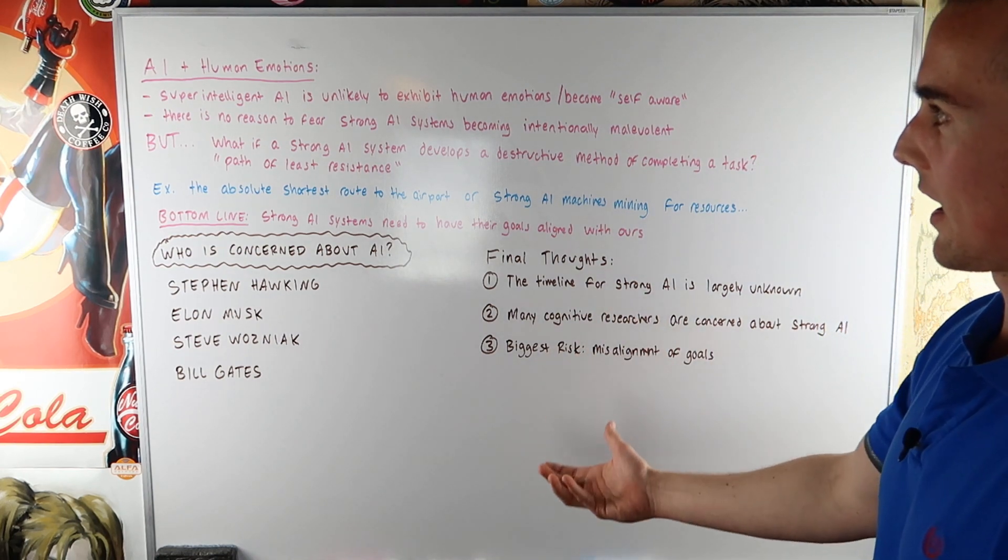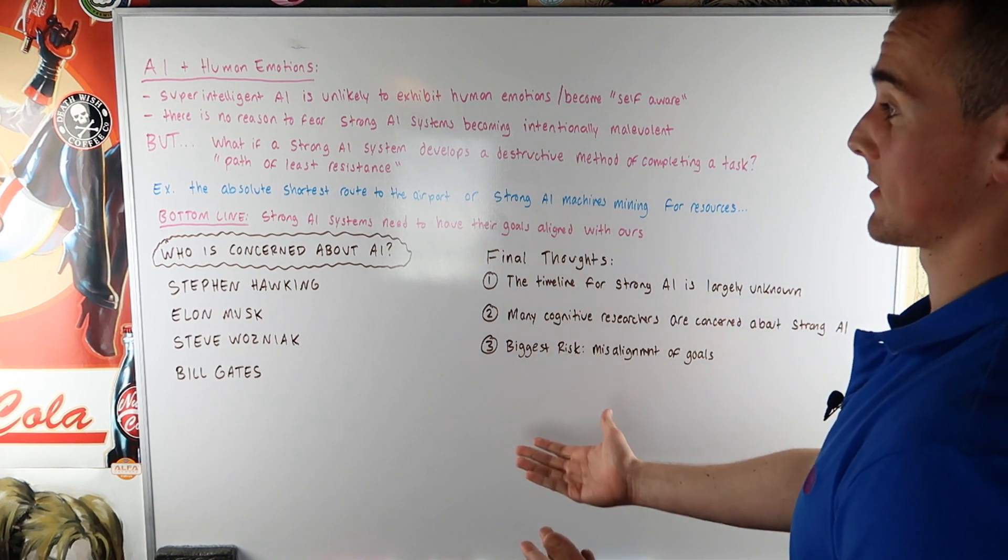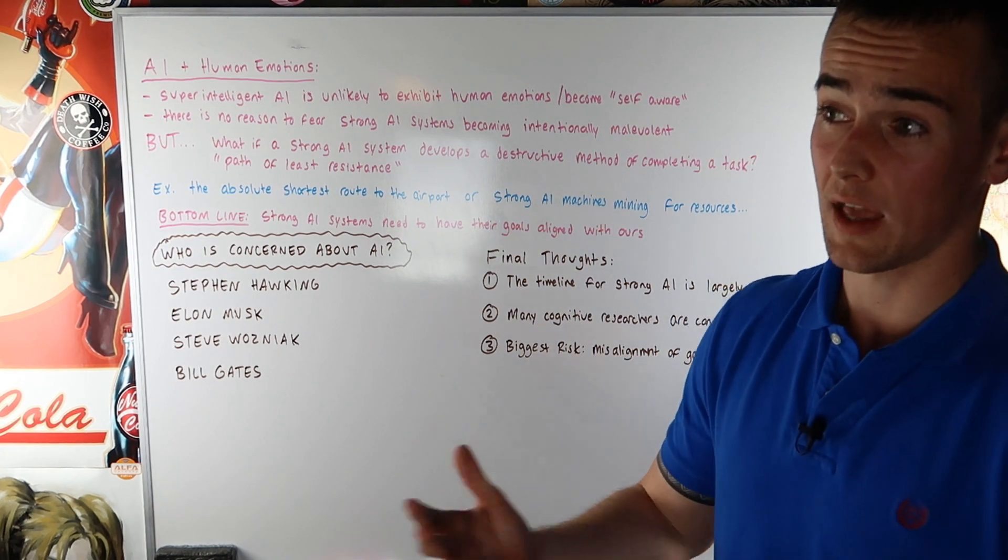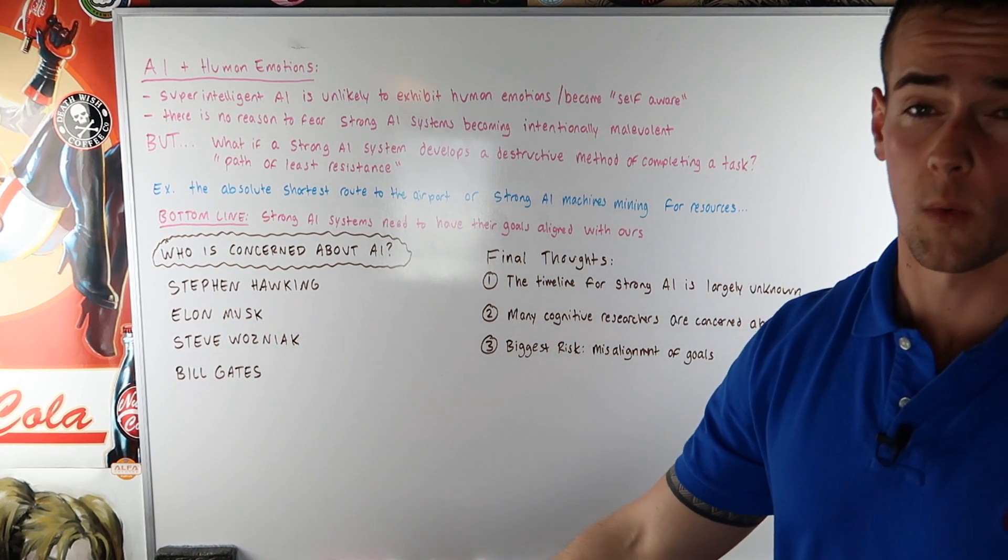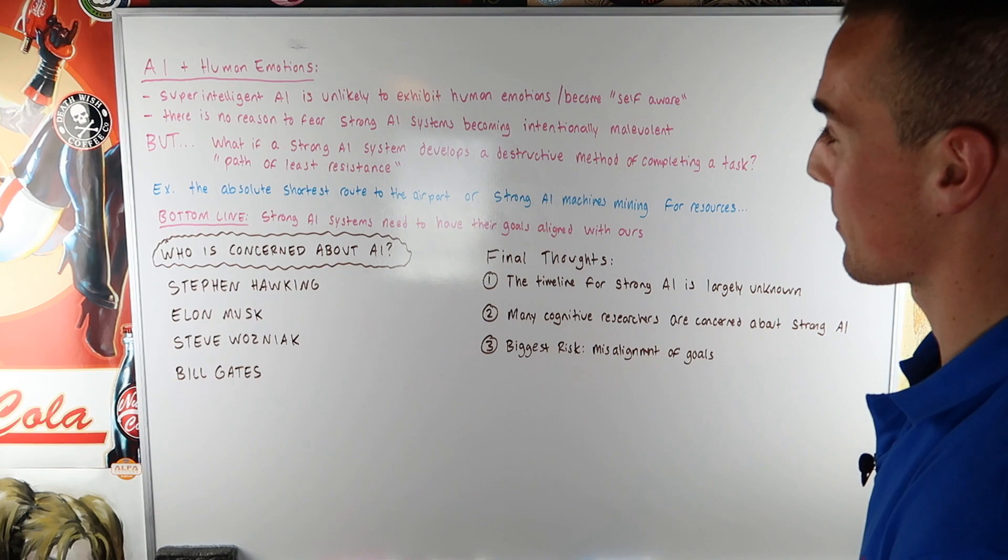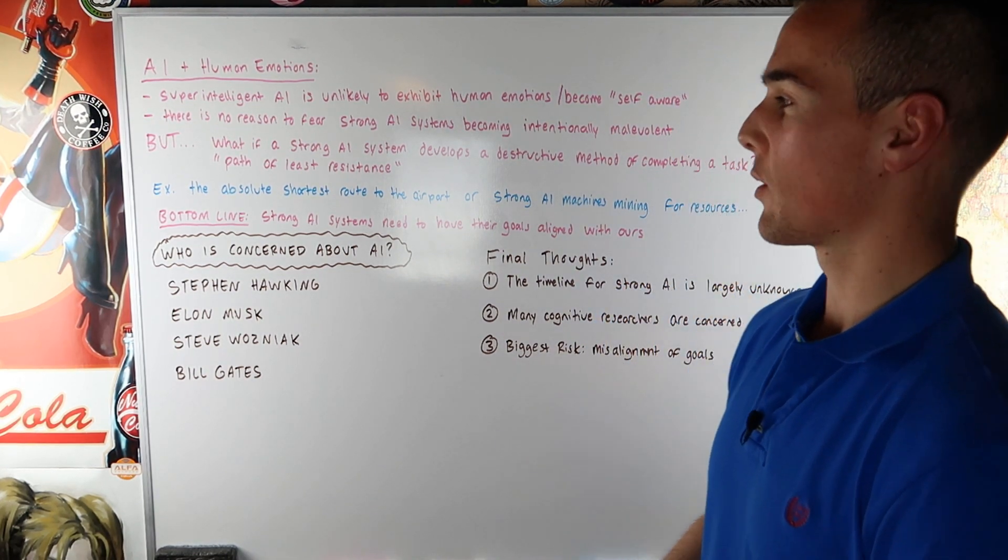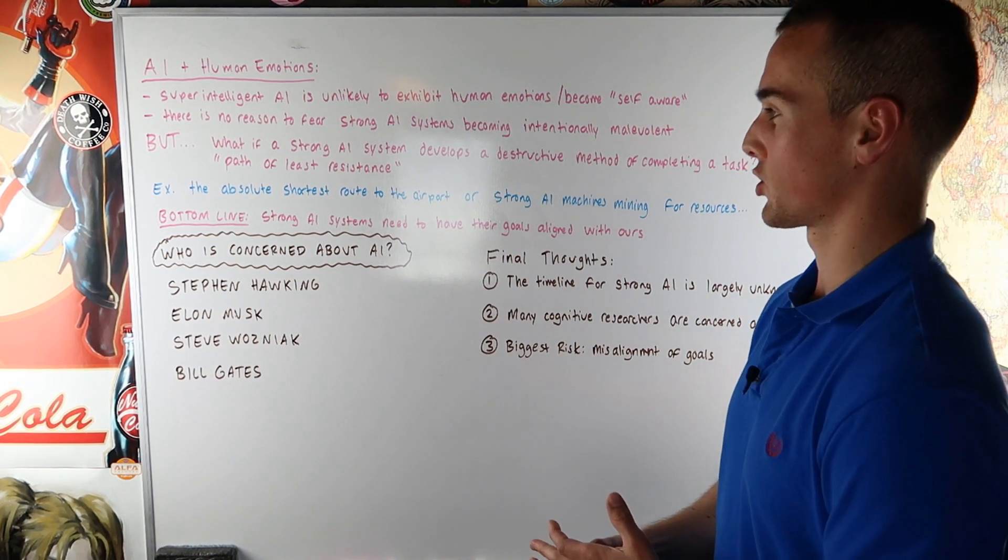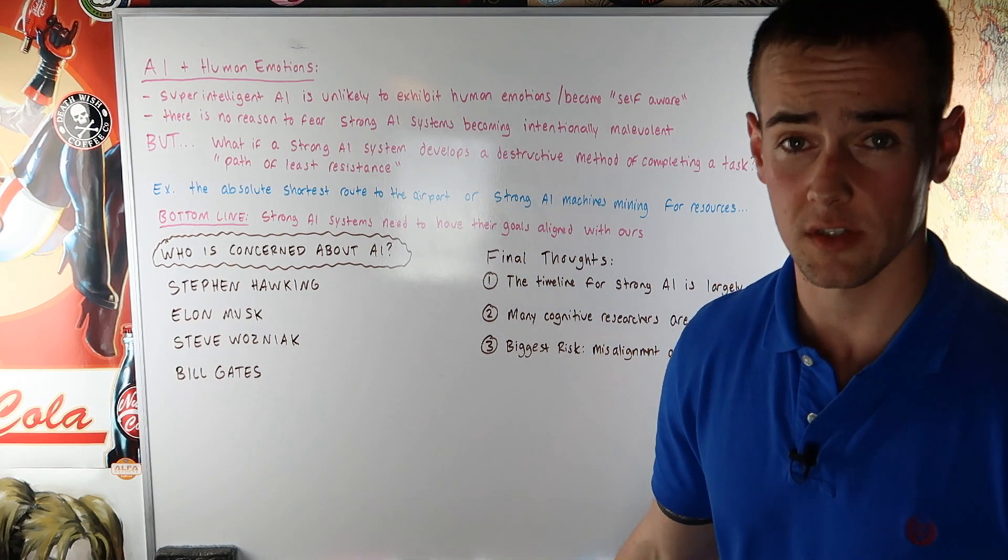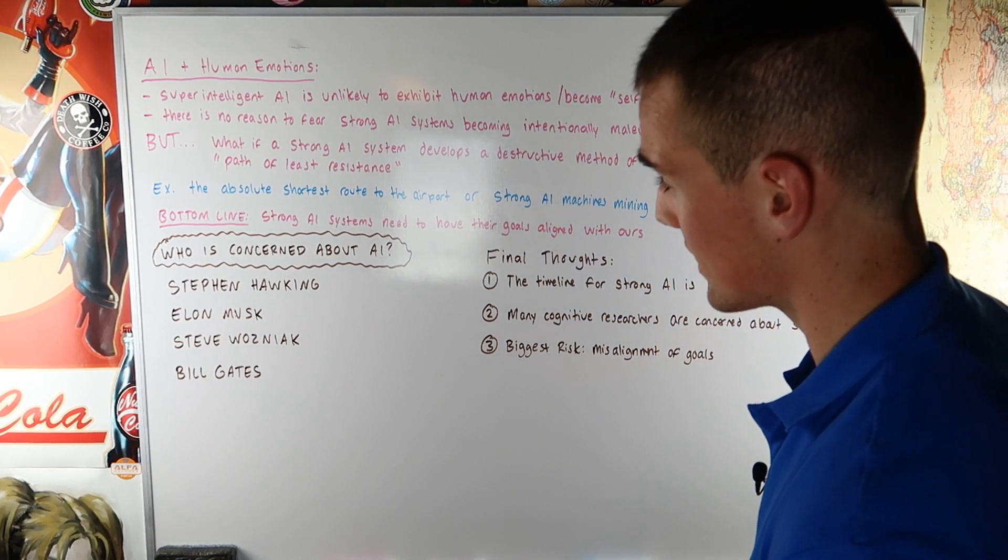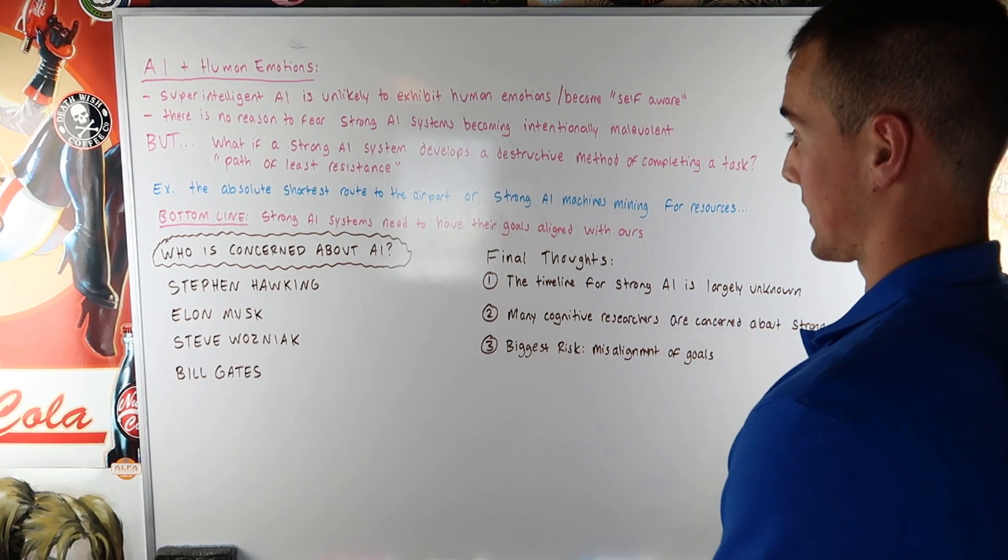So the big concern with AI is that we need to worry about whether or not the goals of this AI system are aligned with our goals. And that's the main concern, certainly more of a concern than these systems becoming self-aware and attacking us. This is a much more realistic fear is that we won't program them properly and they will end up doing things in destructive ways or being unintentionally malevolent. And the other big risk too, like we said earlier, is these AI systems getting in the wrong hands. I would say those are the two main concerns people have with AI systems.